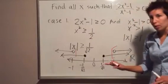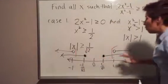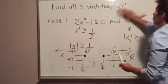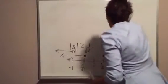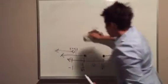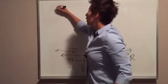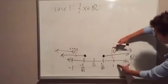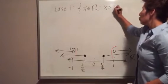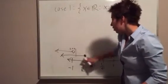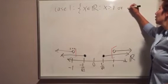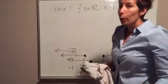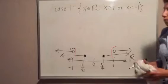For both the numerator and denominator to be positive — or the numerator to be 0 — we need values matching both conditions simultaneously. Writing it in set notation: Case 1 is all x ∈ ℝ such that x > 1, or x < -1. That's what happens when we combine those two conditions to make a fraction where numerator and denominator are both positive, satisfying our inequality.